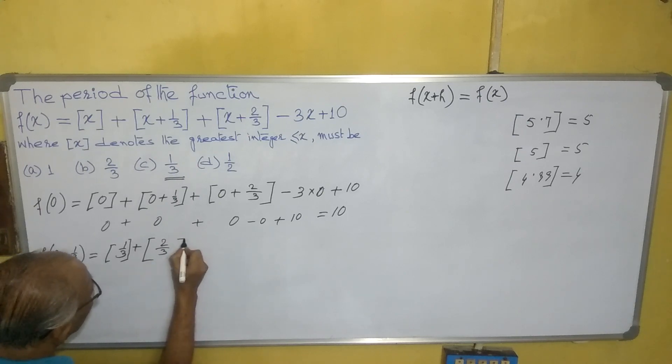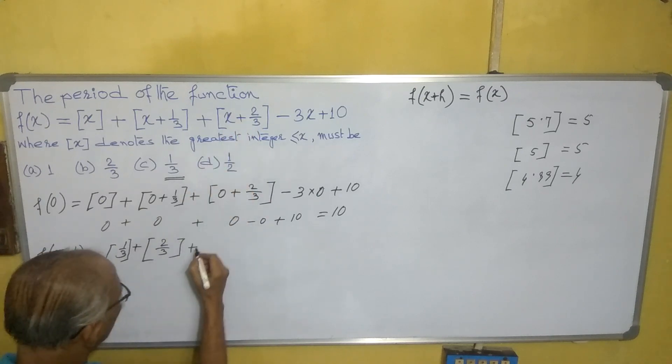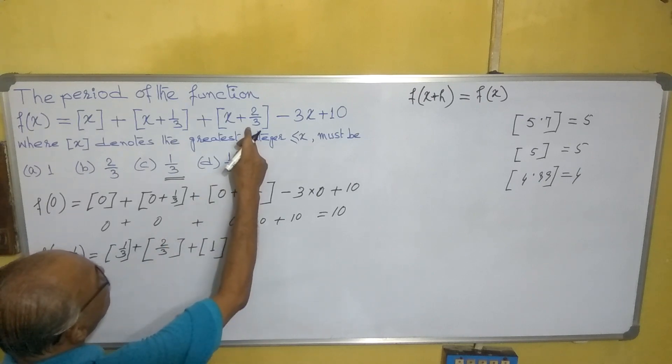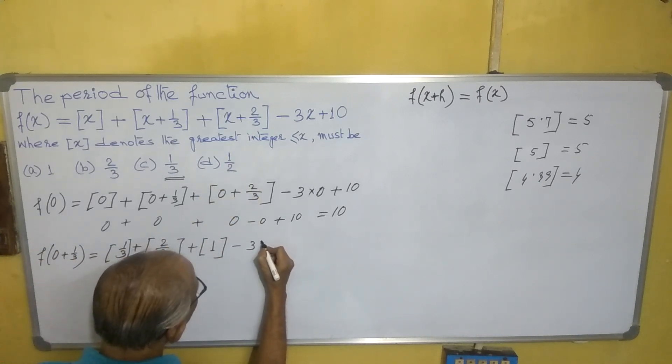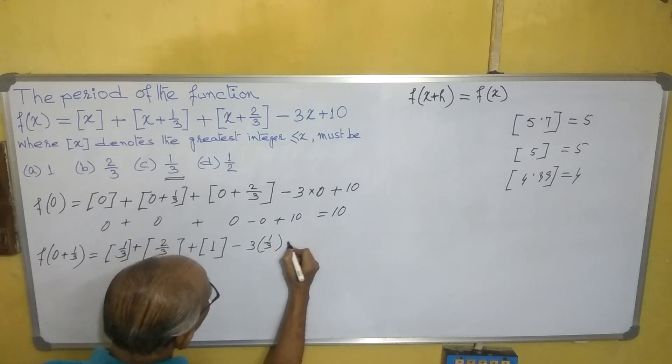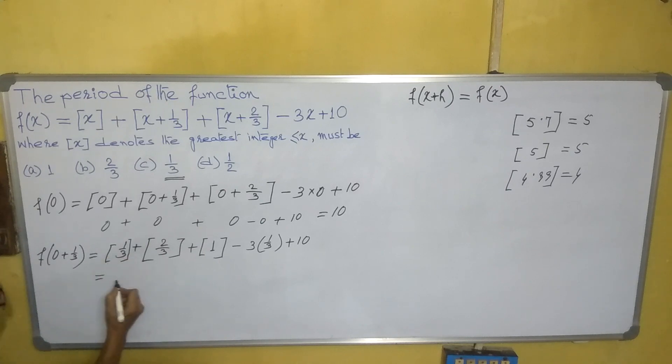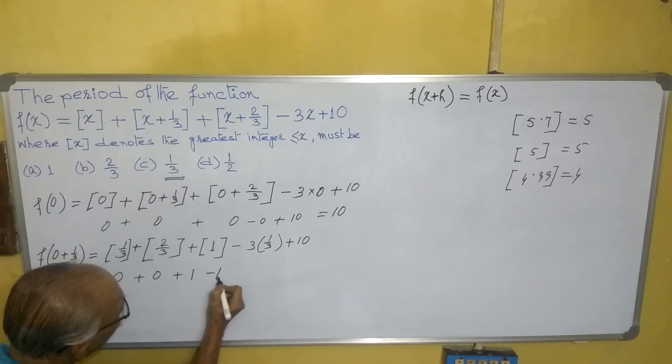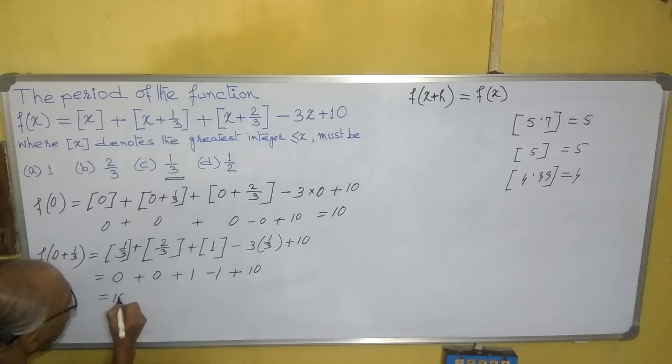Plus x is 1/3 + 2/3 = 1. See here 1/3 + 2/3 = 1. Minus 3(1/3) + 10. So what is coming? See here [1/3] + [2/3] + [1] - 3(1/3) + 10 = 0 + 0 + 1 - 1 + 10. So this is also coming to 10.